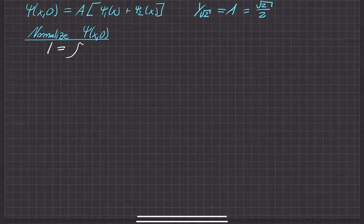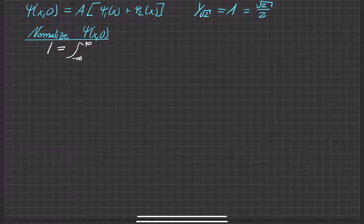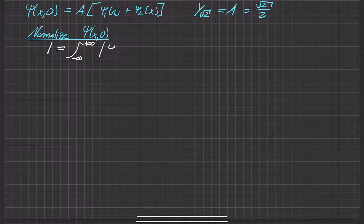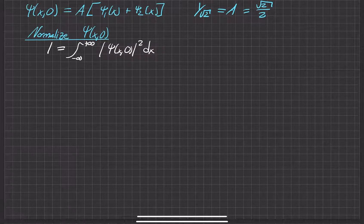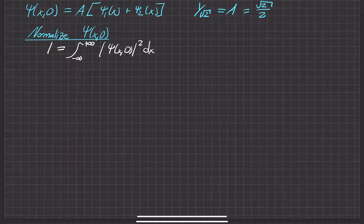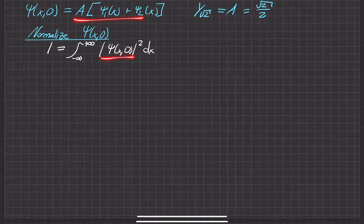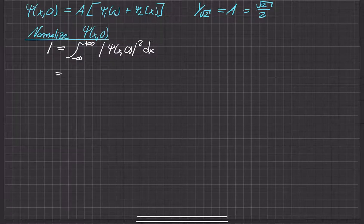Let's go ahead and do it quantitatively. In order to normalize a wave function, we integrate the probability density over all space, which must equal one — we have a 100% chance of finding the particle if we add up all the probability density over all space. So we throw our wave function into this relation.